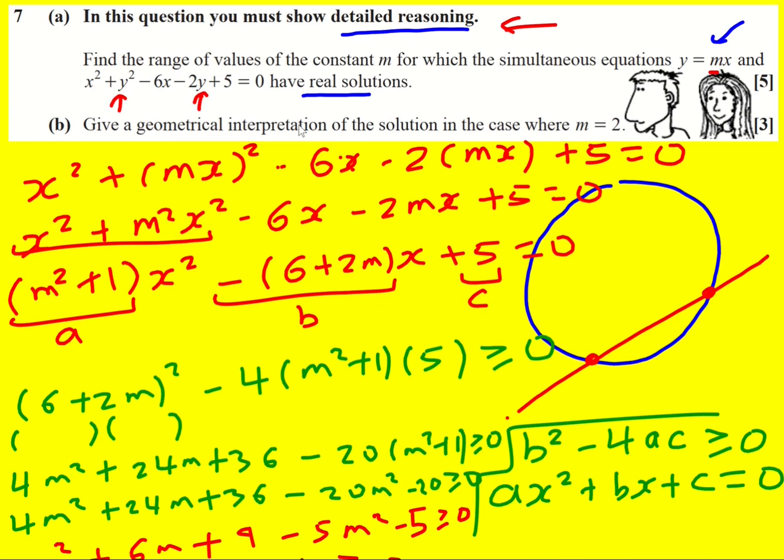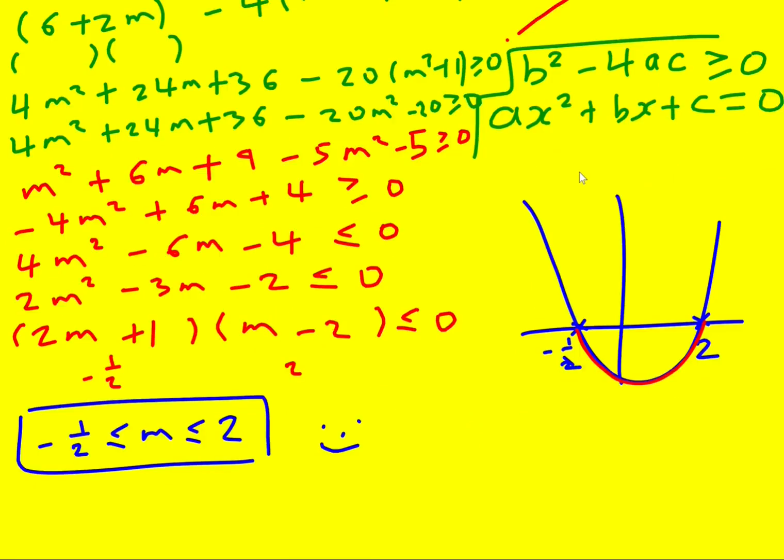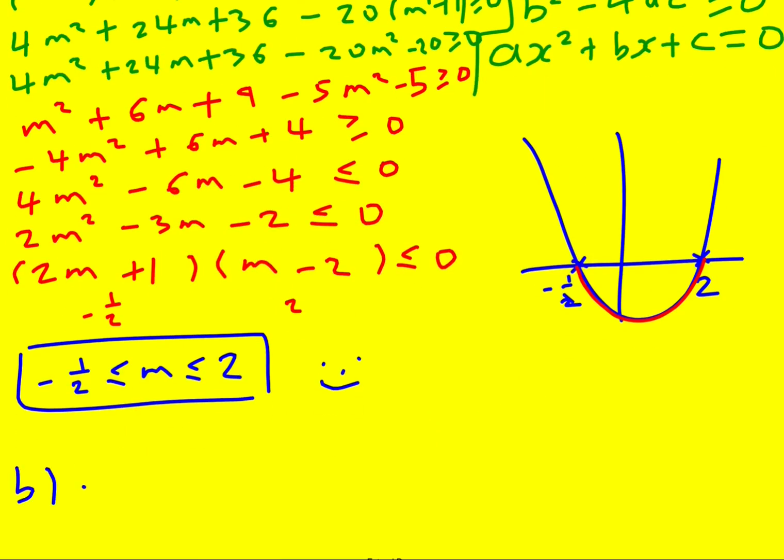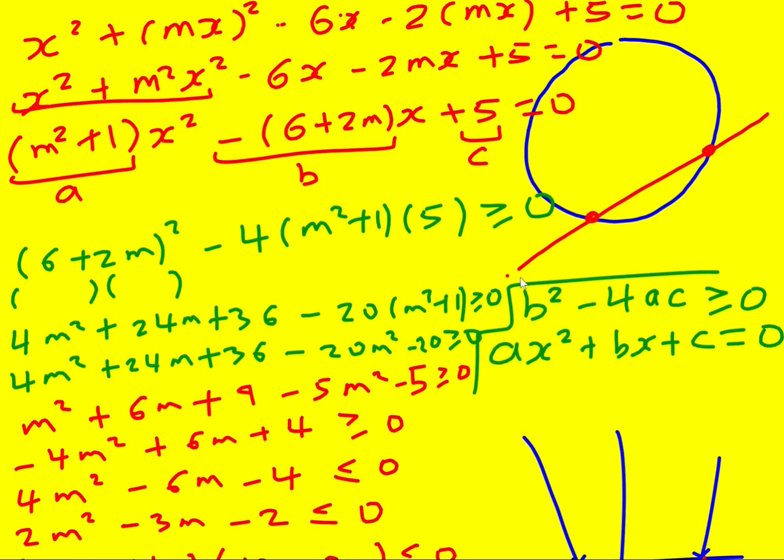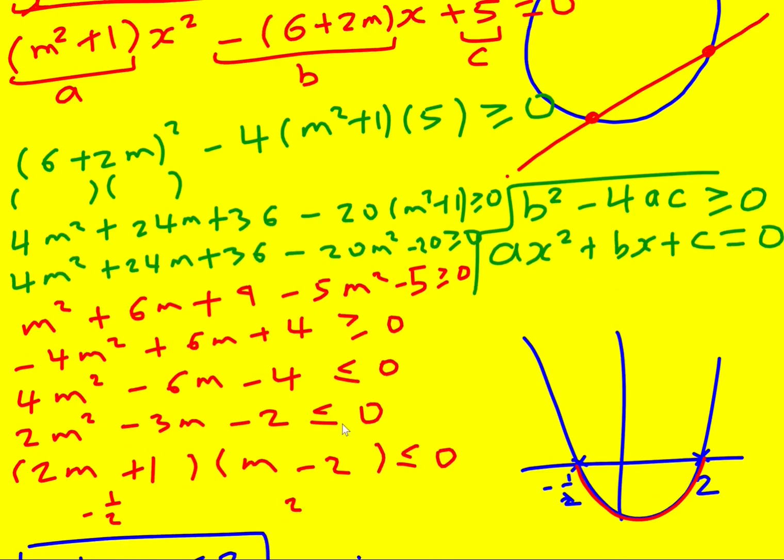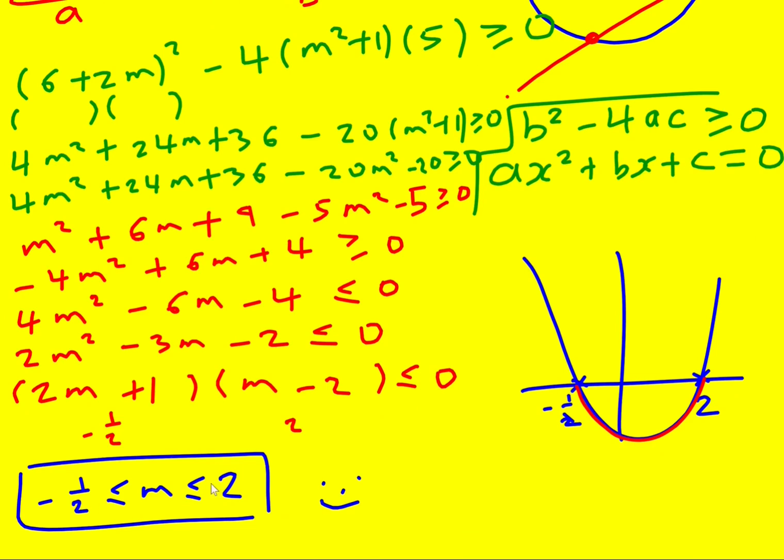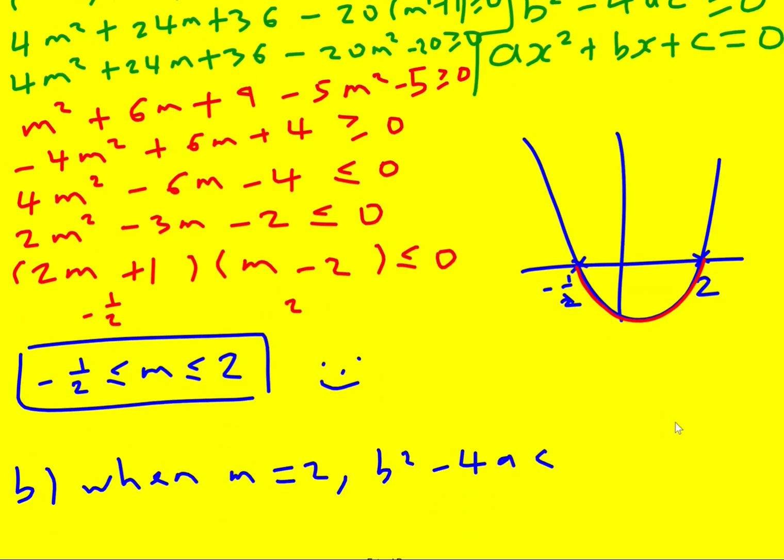Finally we're asked to give a geometrical interpretation of the solution in the case where m equals two. It's three marks, we've got to make sure we write enough here. When m equals two, now there's different ways you can do this but I opted to just look at the discriminant because basically that's what we calculated here. We found when the negative discriminant was equal to zero, that was when it was two, so it's also going to be when the discriminant is equal to zero.